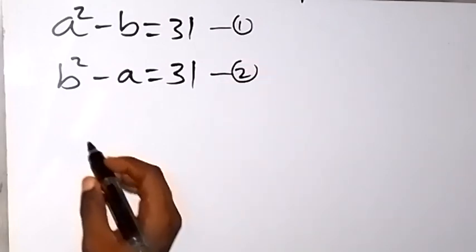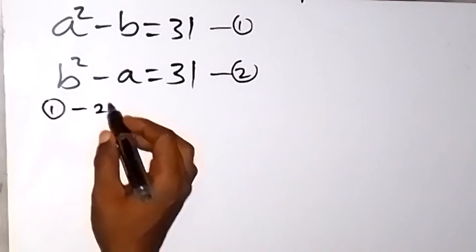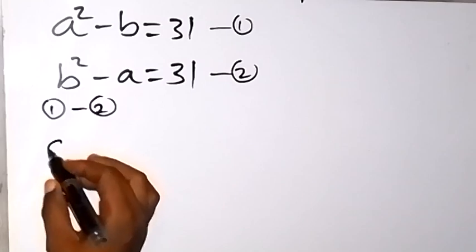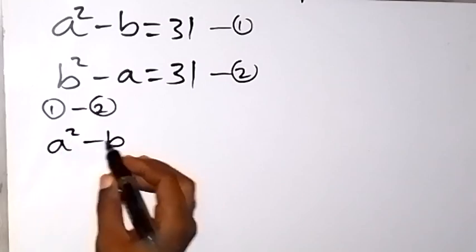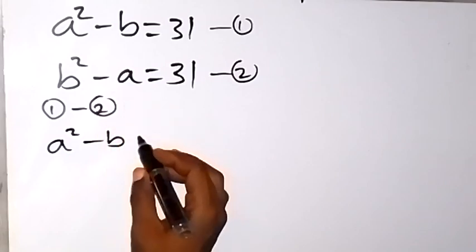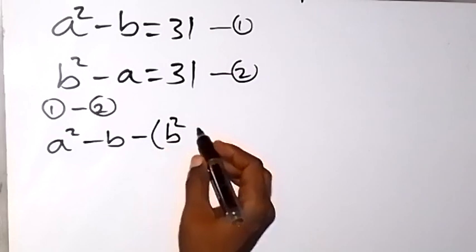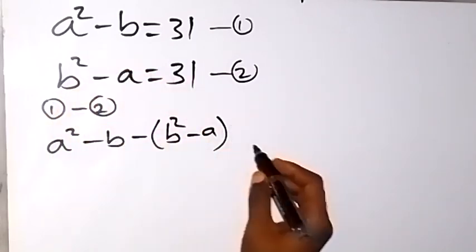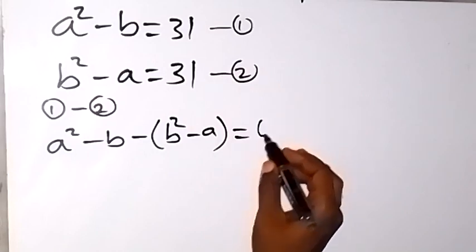Let's subtract equation 2 from equation 1. From equation 1 we have a² minus b on the left-hand side, then from equation 2 we subtract b² minus a. The right-hand side gives us 31 minus 31, which equals 0.